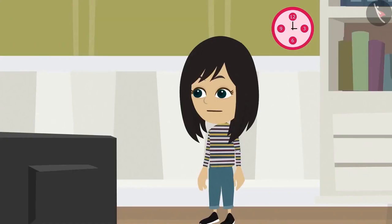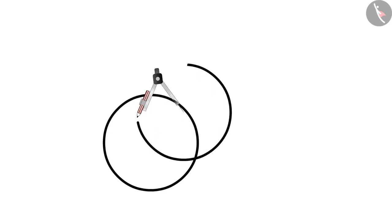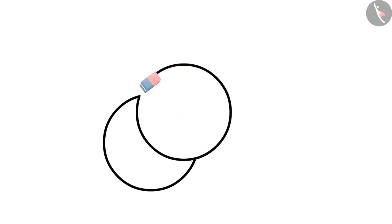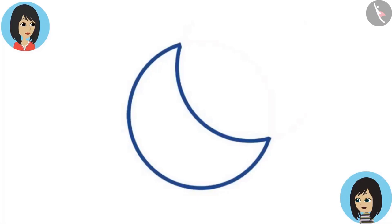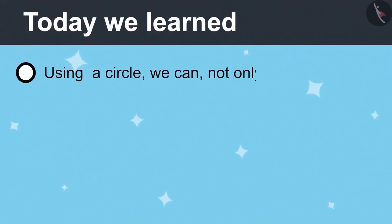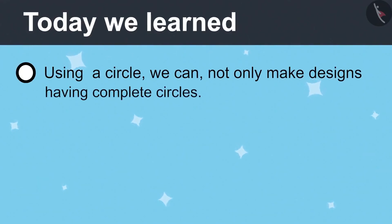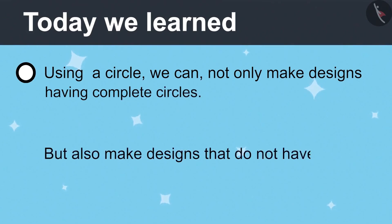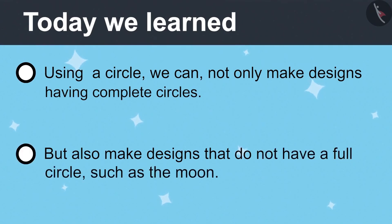Do you mean a design like this? Yes. Let me make it for you. First, we draw a small circle. After that, we make a second circle which overlaps the first circle. Then we remove the line of the first circle which comes inside the second circle. We will not remove the line of the second circle which was inside the first circle. Look, a moon-like shape is formed. You have become very intelligent. Thank you. No full circle is visible in this shape, yet it is a shape made from a circle.